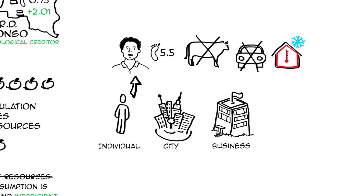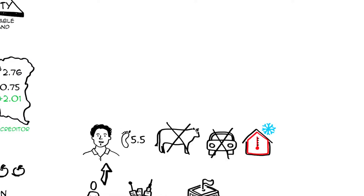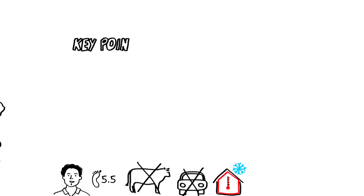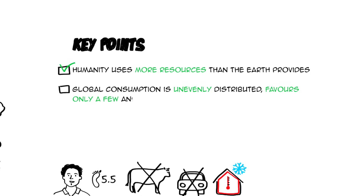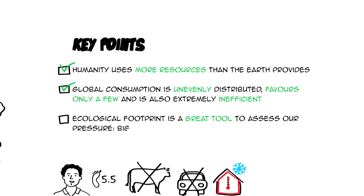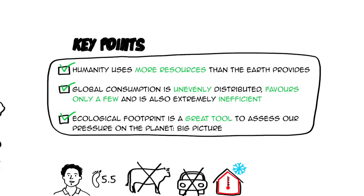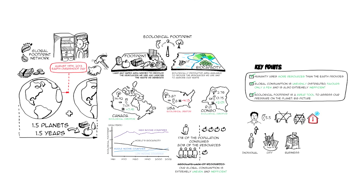The ecological footprint is a really useful way of understanding our relationship to the planet and how the ways in which we live impact our ability to survive and thrive as a race over time. Here are the key points: humanity uses more resources than the earth provides; the main problem is not the absolute lack of resources but that our global consumption is unevenly distributed, favors only a few, and is extremely inefficient; and the ecological footprint is a great tool to assess the pressure we put on the planet — it helps us keep the big picture in mind. In the next video, we'll use this ecological footprint combined with a few other things to create a powerful metaphor that describes our sustainability challenges.